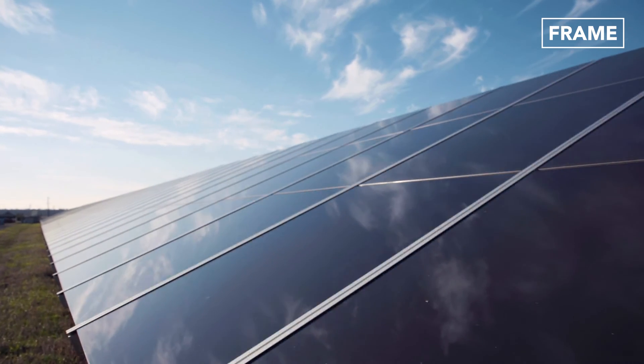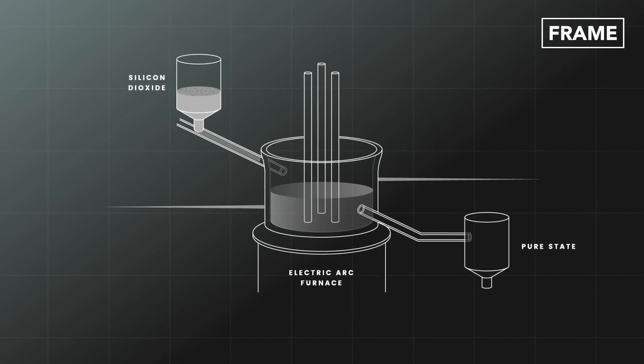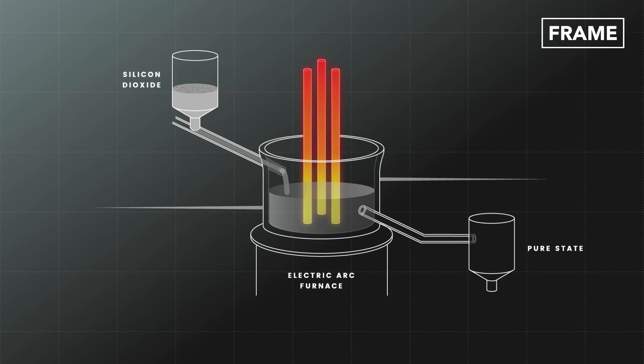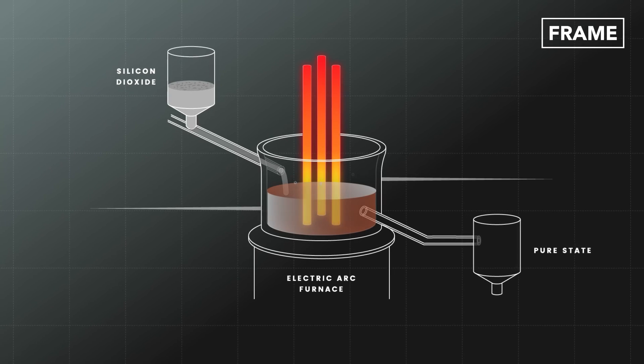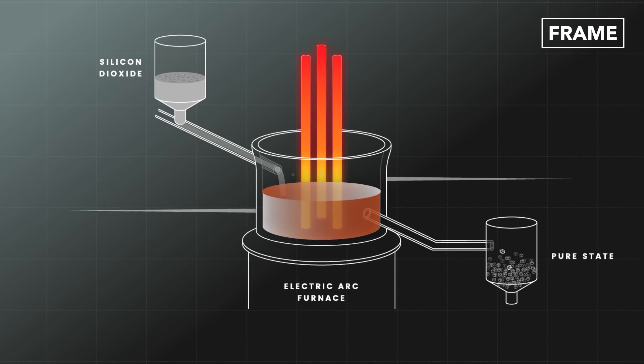Silicone is the most essential ingredient in cells because it acts as a semiconductor, allowing electrons to be created from photons. To process this material, silicone dioxide is fired in an electric arc furnace to remove most of its impurities, before further refining ensures it reaches a pure state.